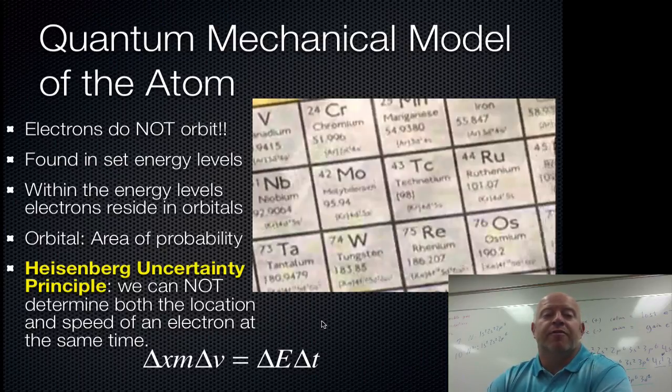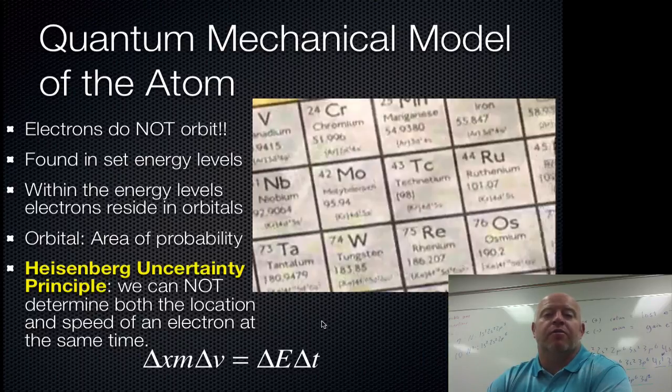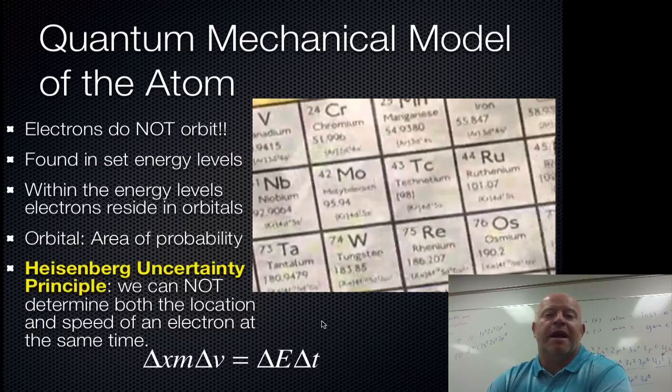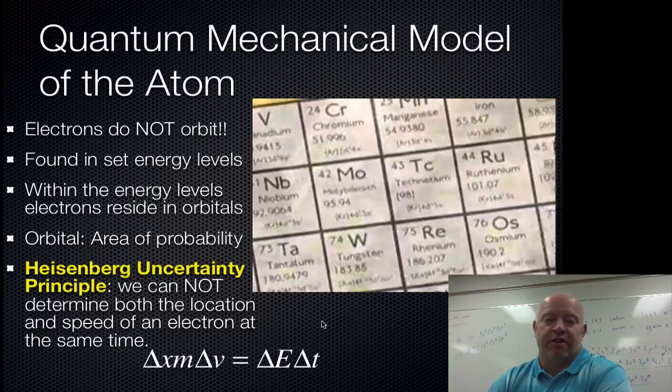So, this model is definitely more complex than what we've seen before but it is not so complex that we still can't map out the location of the electrons. We just need to do something a little bit different to do that and what we need to use is something called electron configurations.